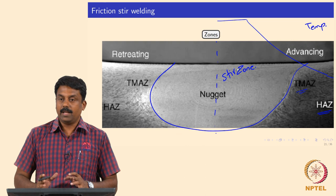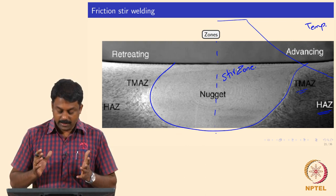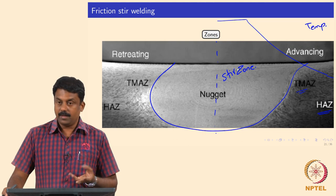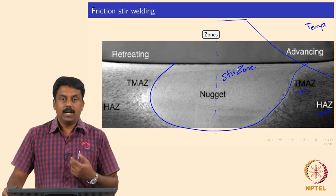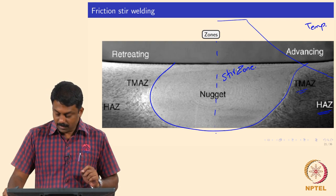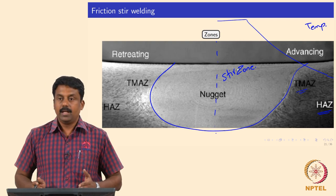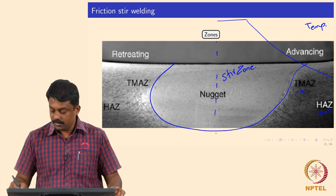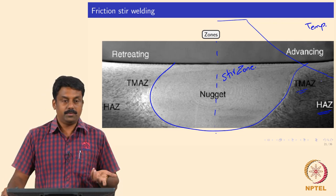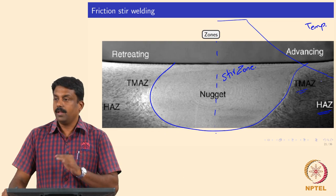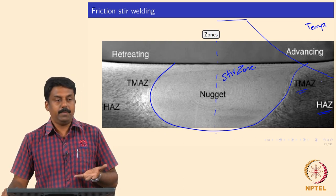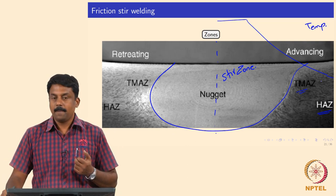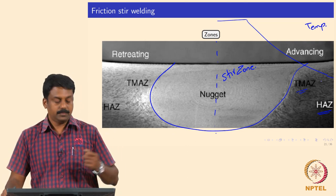The various zones present in friction stir welding: the stir zone, where both mechanical plastic deformation and temperature heating cause dynamic recrystallization simultaneously; the thermomechanically affected zone (TMAZ) at the boundary between the stir zone and HAZ; and the heat affected zone further out, where you see only the effect of temperature with no real mechanical deformation.